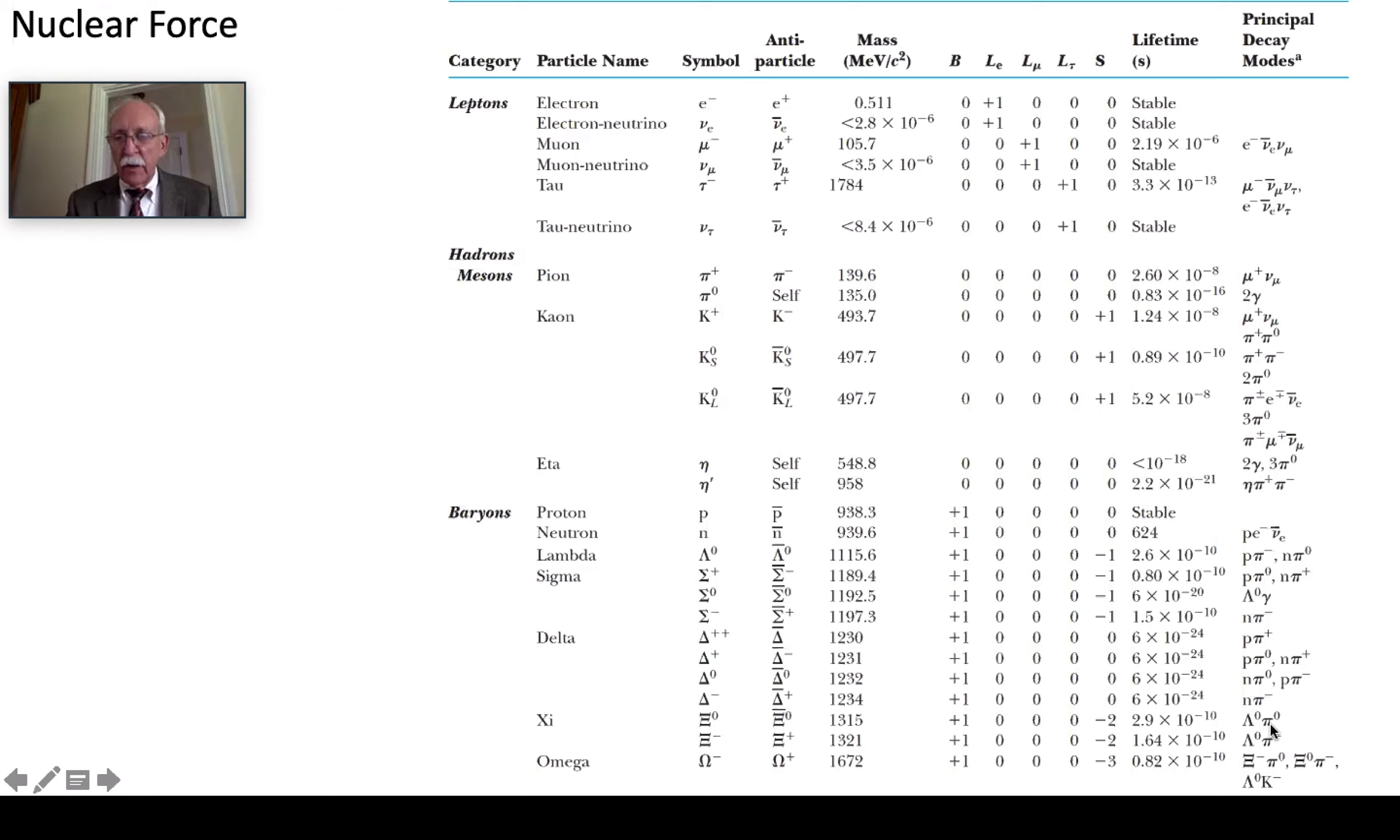These are some of the decay modes. You notice there aren't many stable particles here. You've got a proton, a tau neutrino, a muon neutrino, and an electron neutrino. And those three are stable only because they keep changing into each other. And something we can lay our hands on is the electron.